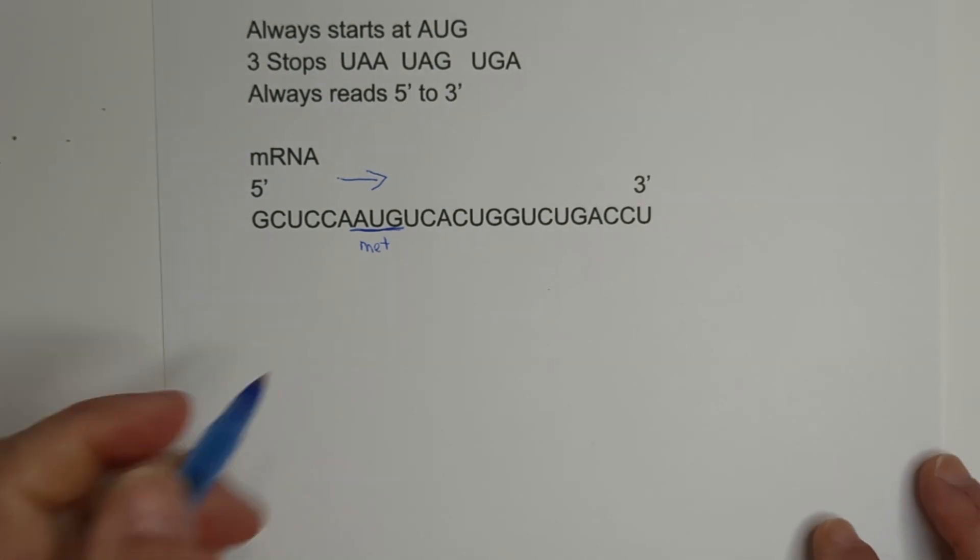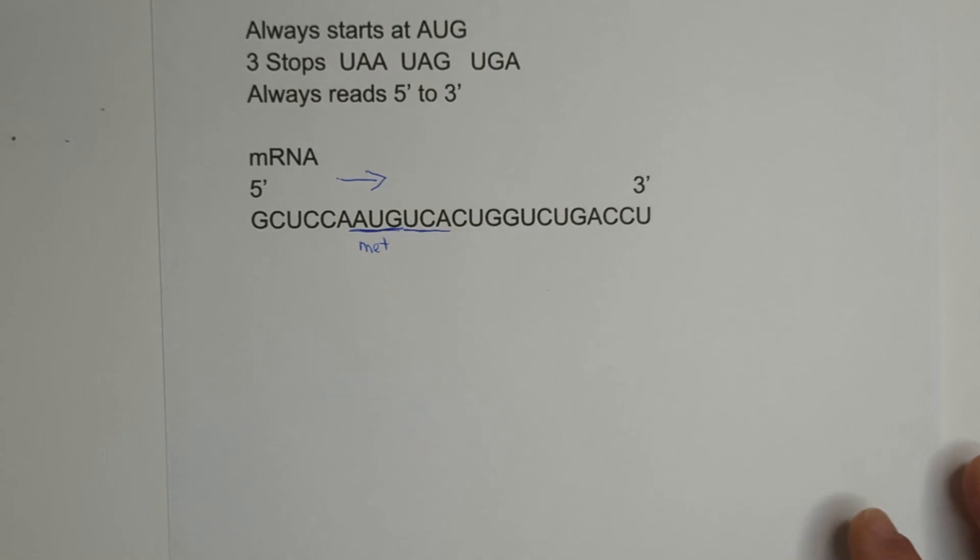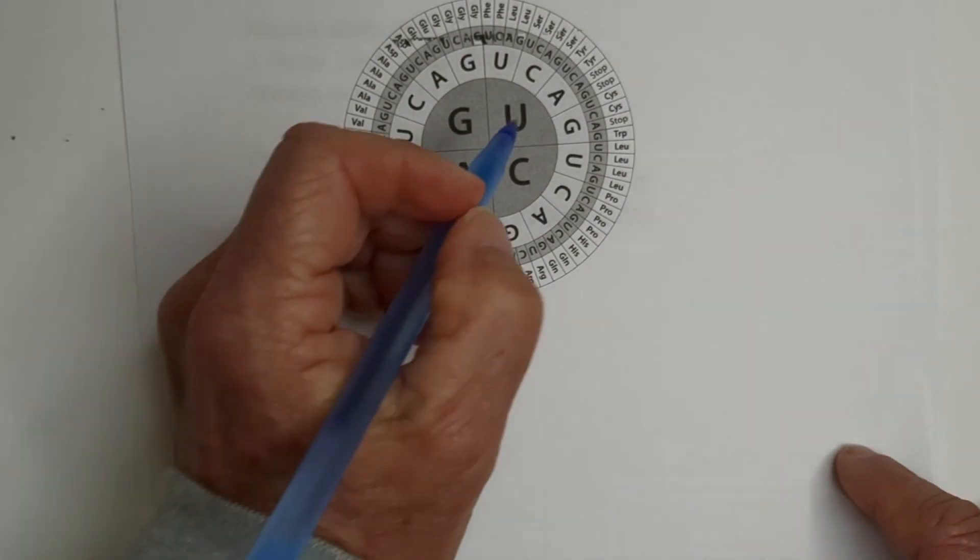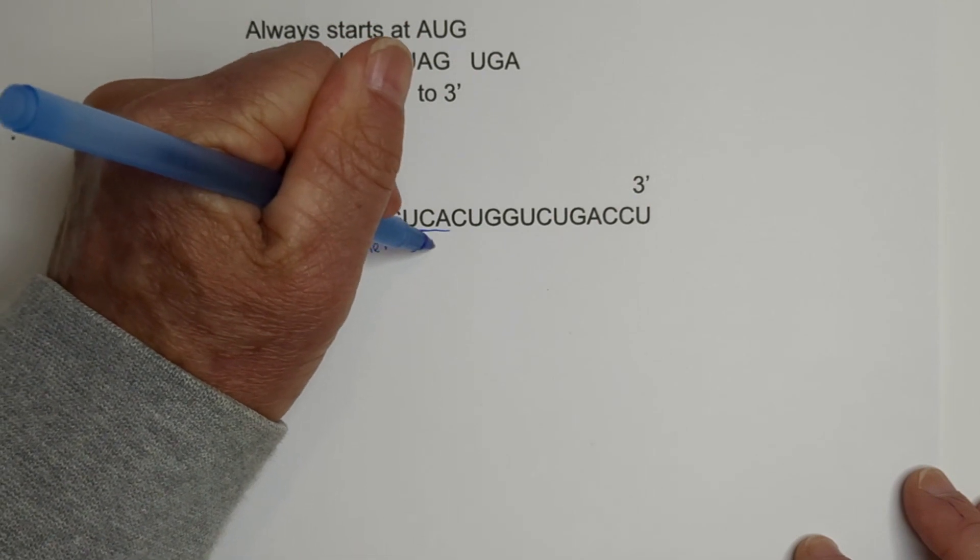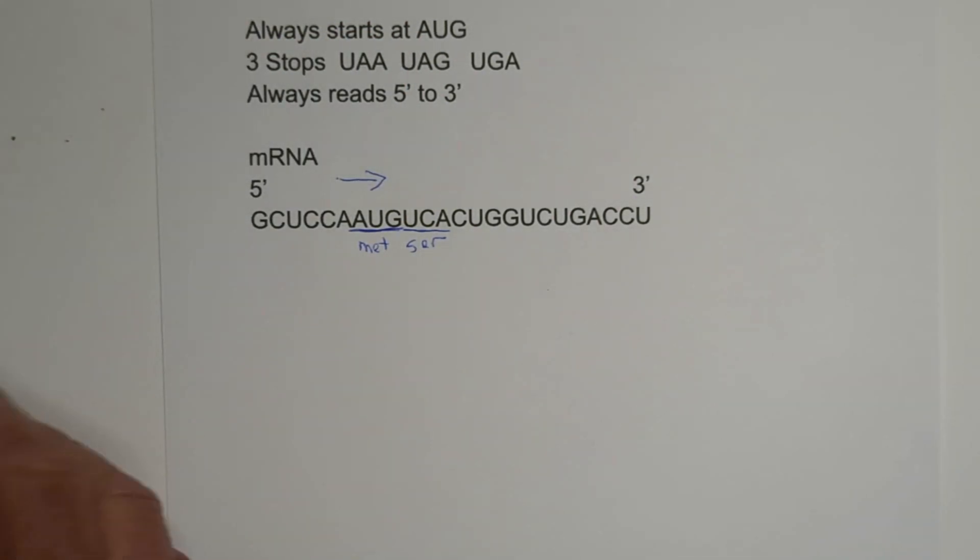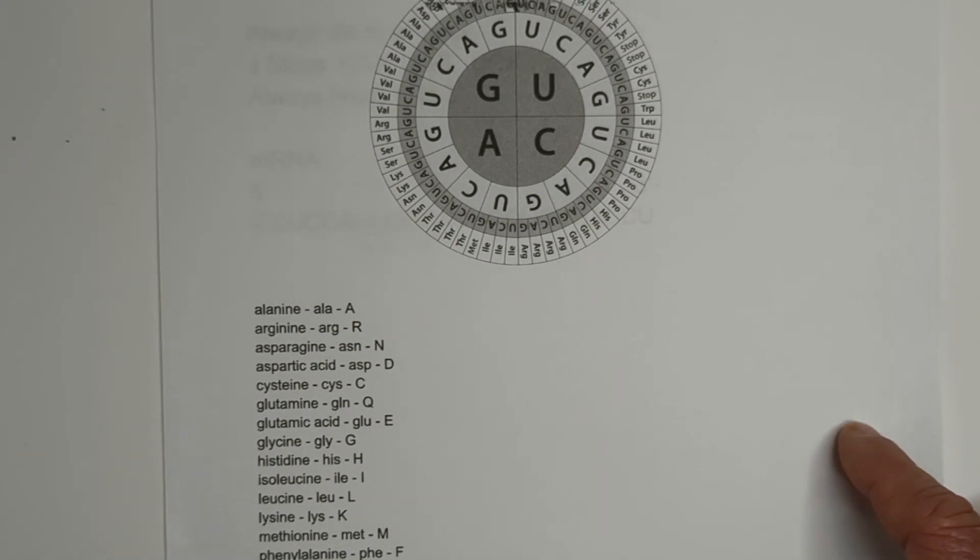and so now I go UCA. Again, I'm going back to the chart, and we have UCA, and that's SER, and if I look on here, SER is serine. Okay,